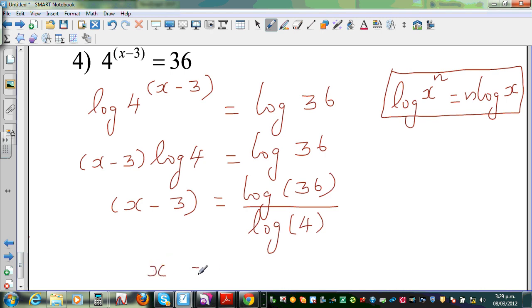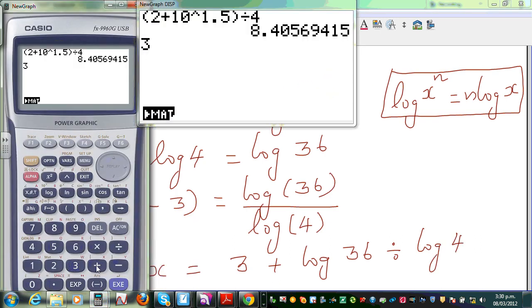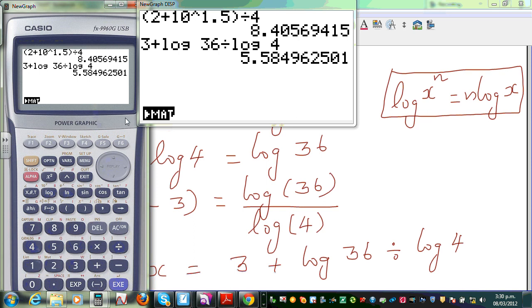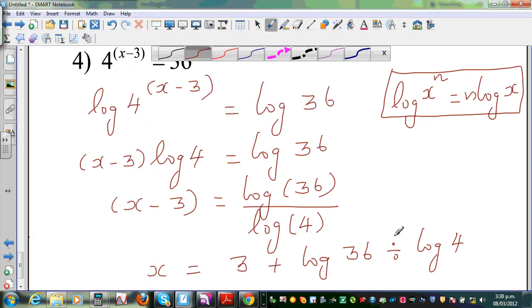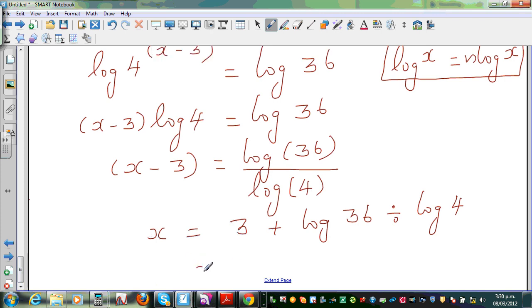So x is equal to 3 plus log 36 divided by log 4. So let us get the calculators out. So which is 3 plus log 36 divided by log 4, which is 5.58. So the value of x is 5.58 to two decimal places.